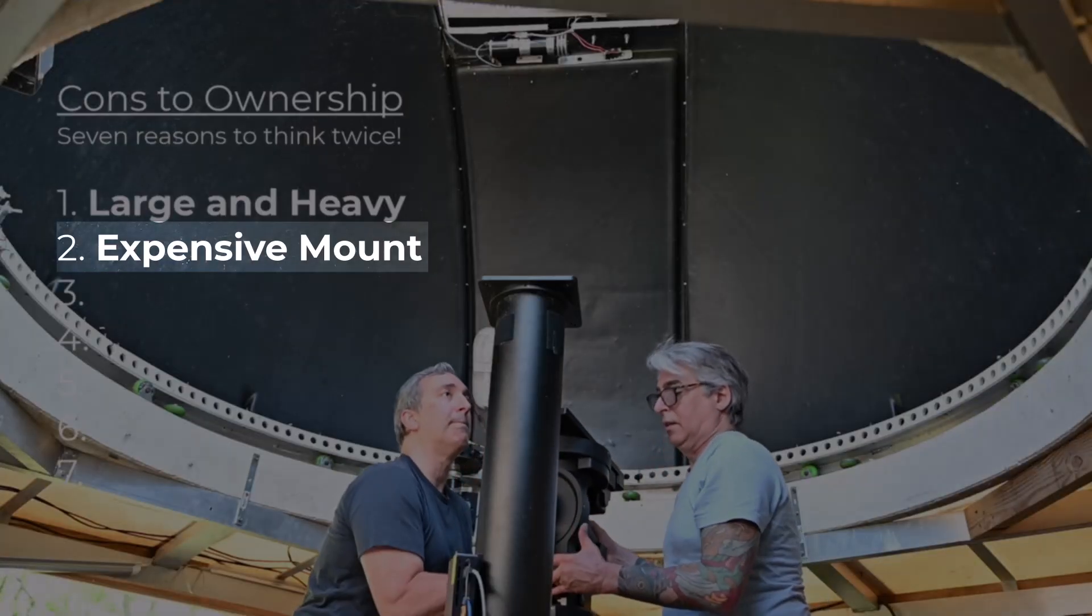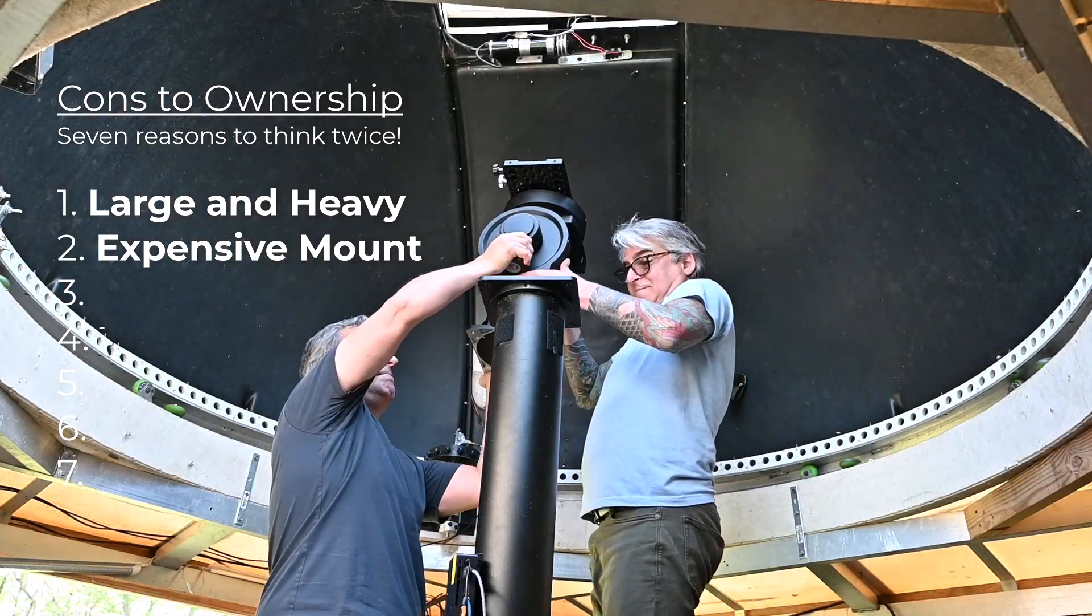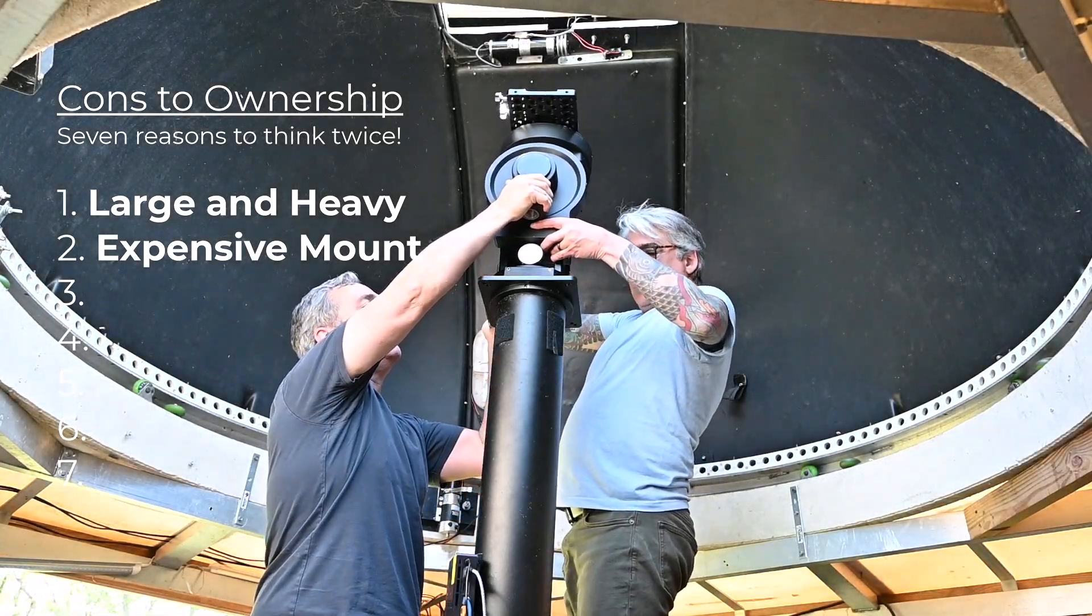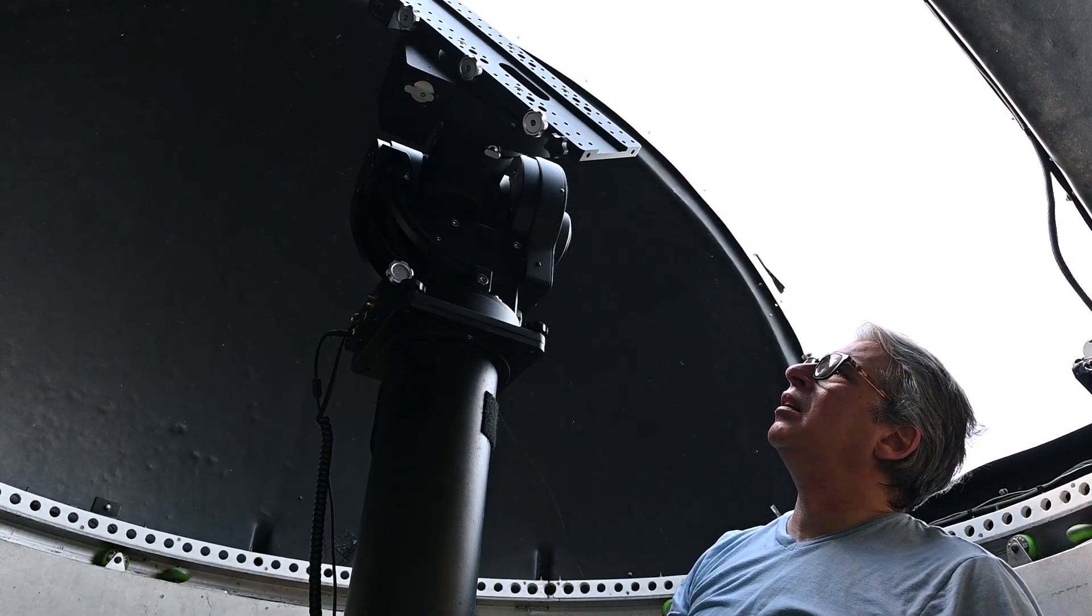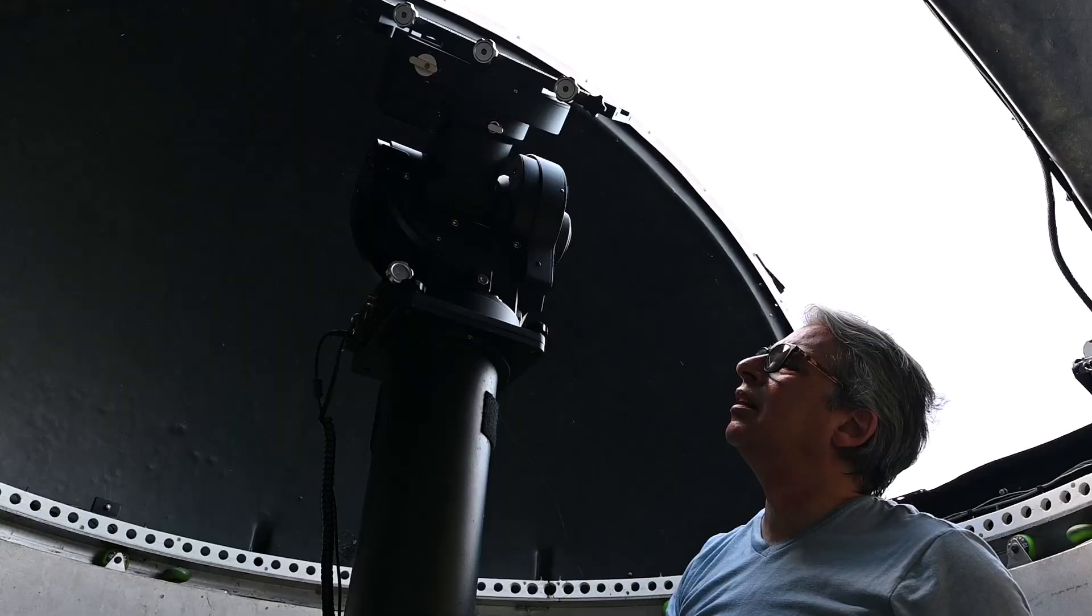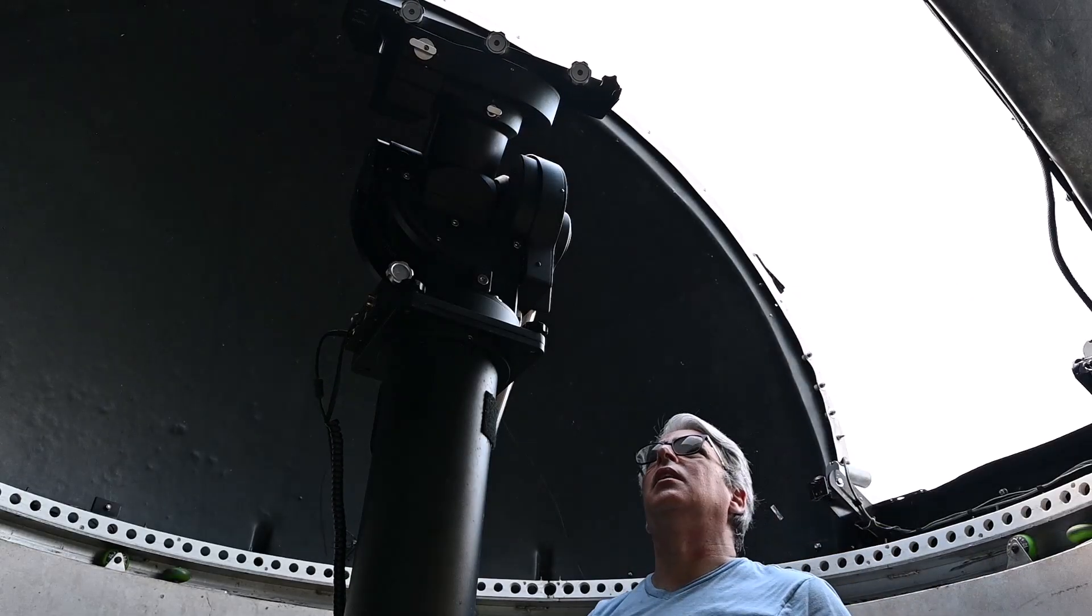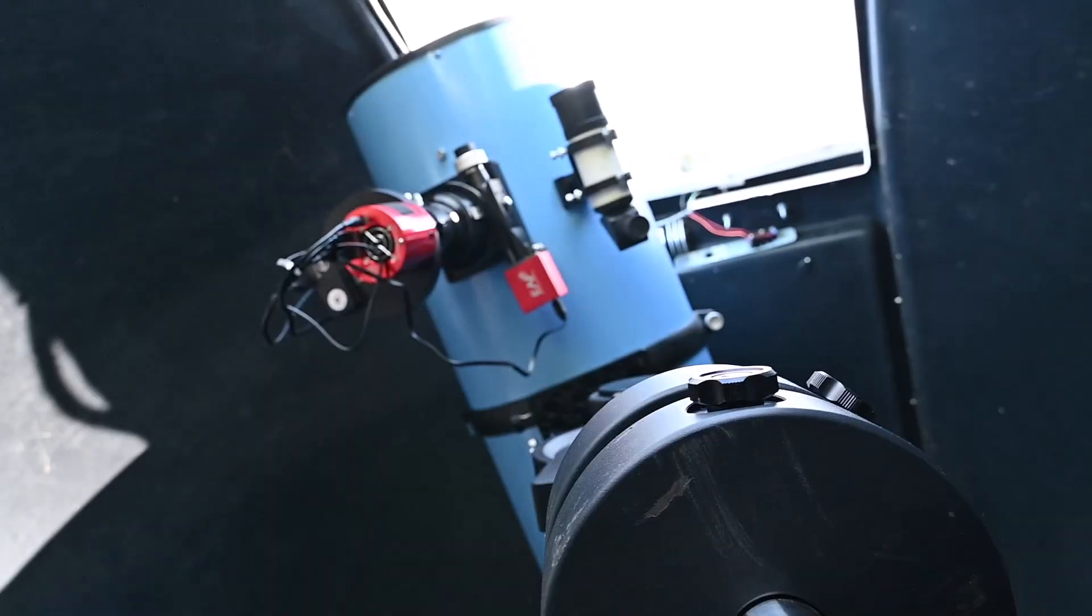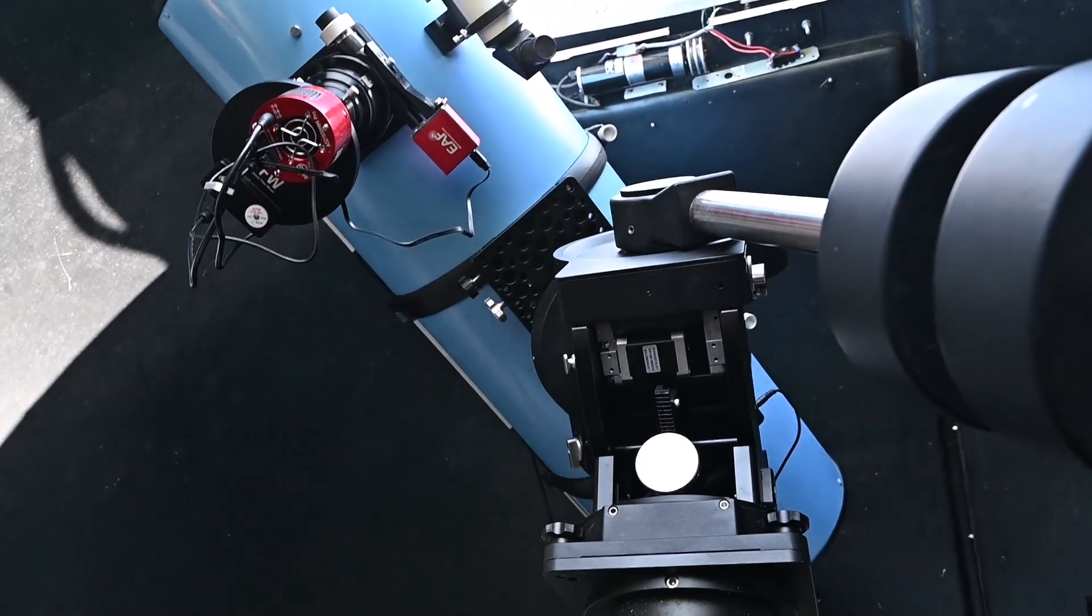Second con, you need a very high-capacity mount, and that means a high price tag. I'm using a CEM-120, which is rated for about 115 pounds of instrumentation, and perhaps it's the most affordable mount in this weight class. But even with its 115-pound capacity, the mount feels like it's being pushed to its limits if the OTA is not perfectly balanced.